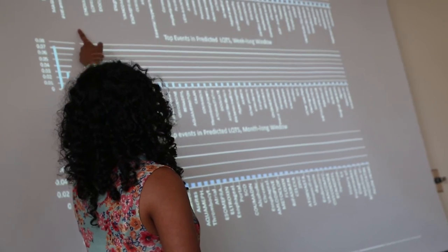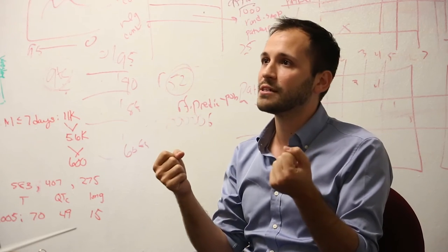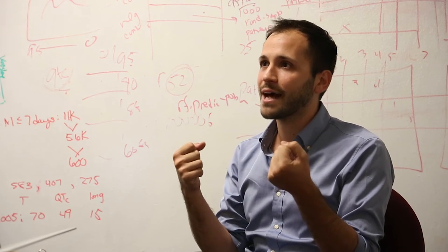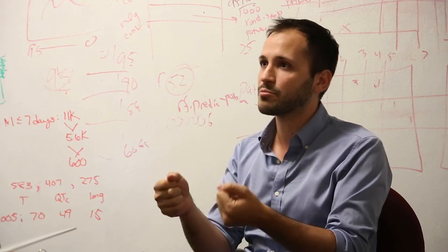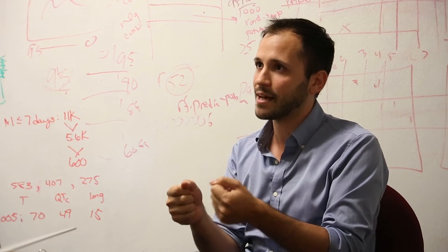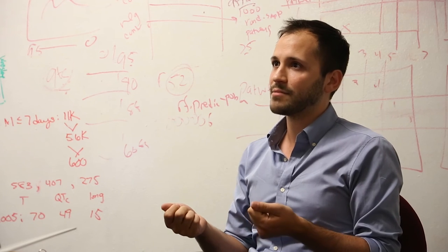And so what we did is we developed a new algorithm so that like astronomers looking for black holes where they use the gravitational pull on other planetary bodies or other star systems to infer the presence of that missing data, that black hole that they can't look at directly, we do exactly the same thing.